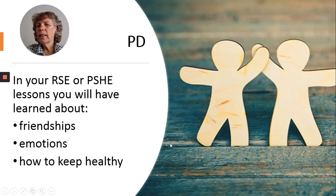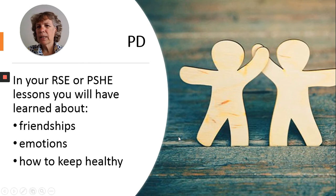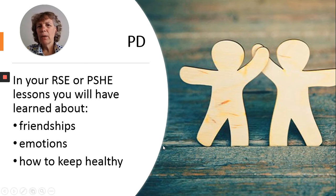So in your R-S-E and P-S-H-E lessons that you've already had, you will have learned about friendships, how to make friends, how to keep friends, about your emotions, how you recognise your emotions, how you control your emotions. Maybe you've learned how to keep healthy, what foods you eat, how much sleep you need.